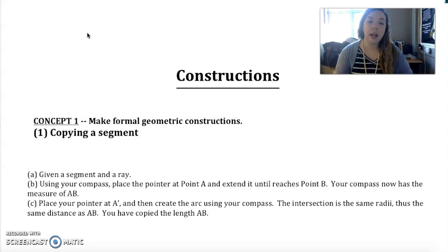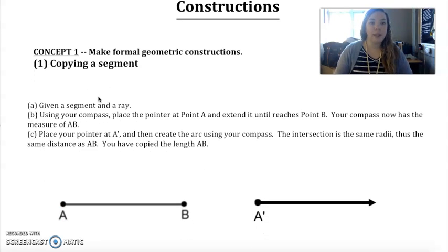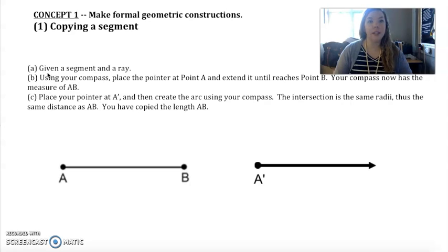Concept one: to make formal geometric constructions. The first one we're going to talk about today is copying a segment. We're going to do one through four today in our notes. Given a segment and a ray, using your compass place the pointer at point A and extend until it reaches point B. That way your compass now has the distance of that line segment. Then you'll put your pointer at A prime.